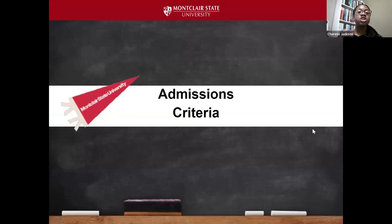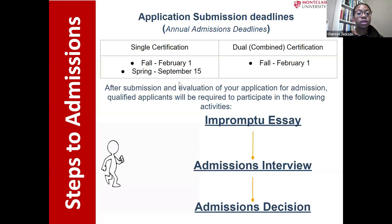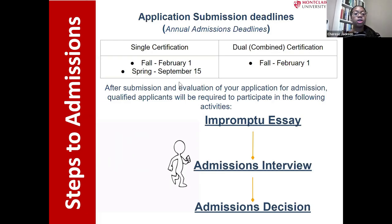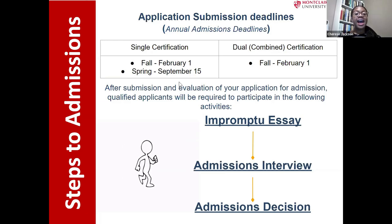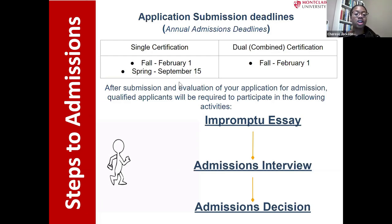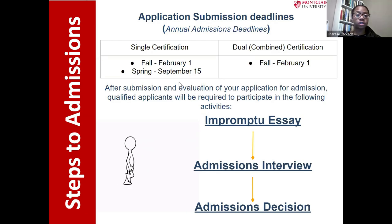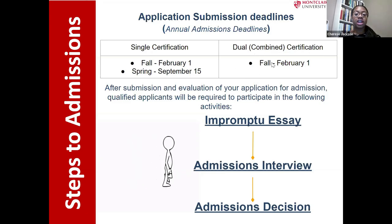Now for the admissions criteria — what you need to get into the teacher ed program. First, deadlines: if you're interested in starting in the fall, which is ideal, the deadline is February 1st. You want to apply at the end of your sophomore year. If you're interested in starting in a spring semester, the deadline is September 15th. All students interested in the combined dual certification can only start in the fall, so their deadline is February 1st.